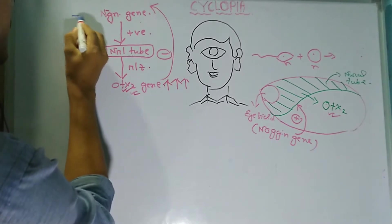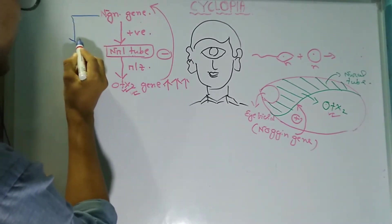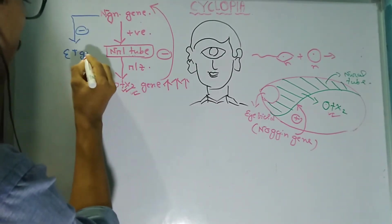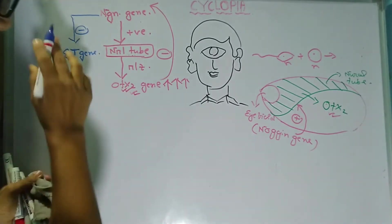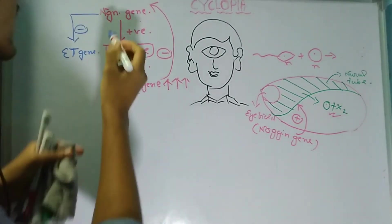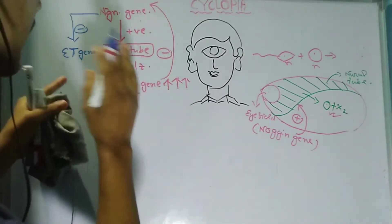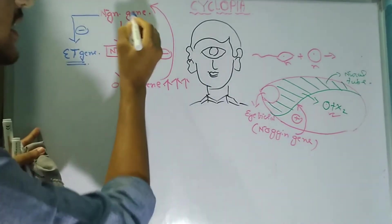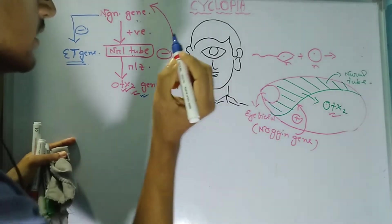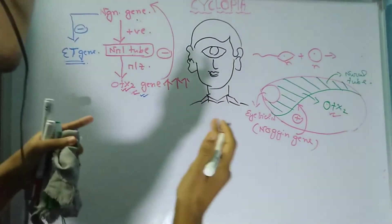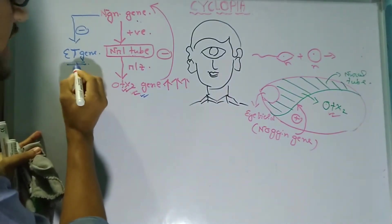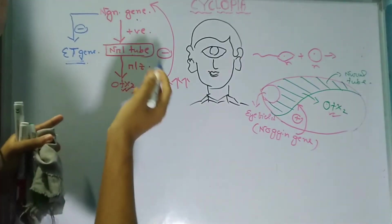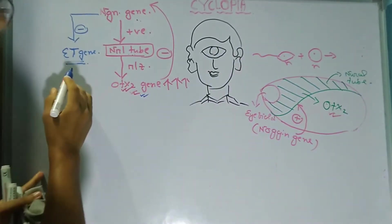The second function of the Nogin gene is to inhibit the expression of the ET gene. When the Nogin gene is inhibited by OTX2, the Nogin gene is no longer able to inhibit the ET gene. So at the very first step, Nogin is able to inhibit ET gene expression, but once OTX2 inhibits Nogin, the Nogin gene can no longer inhibit the expression of the ET gene.